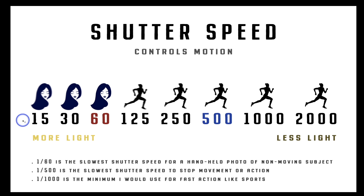After 30 seconds, you'll see something called B, which stands for bulb. Bulb means as long as you hold your shutter down, you can take the picture, and when you release the shutter button, it stops. For example, if you needed a two-minute exposure, you'd have to stand there and hold down that button for two minutes, then let go. Just like everything else, shutter speed is in whole stops, but you will see numbers in between — so it would actually go 30, 40, 50, 60.